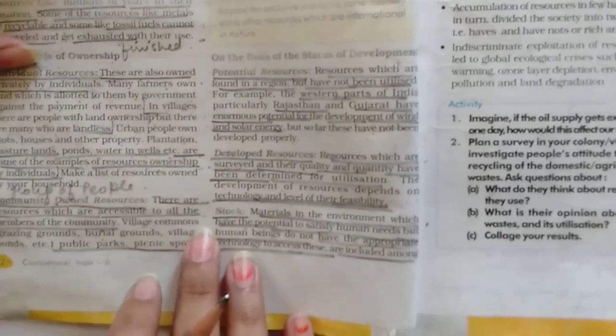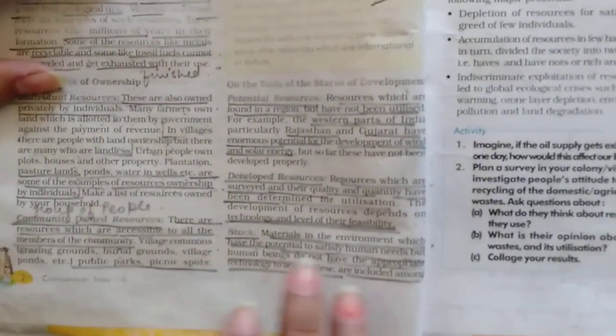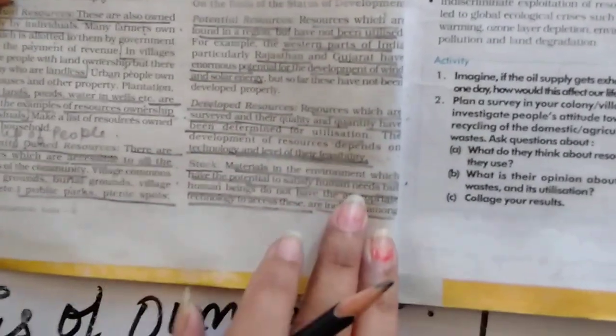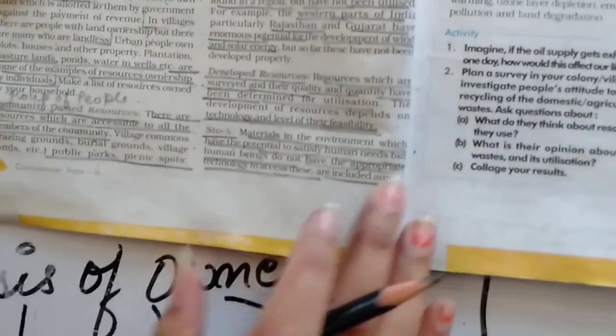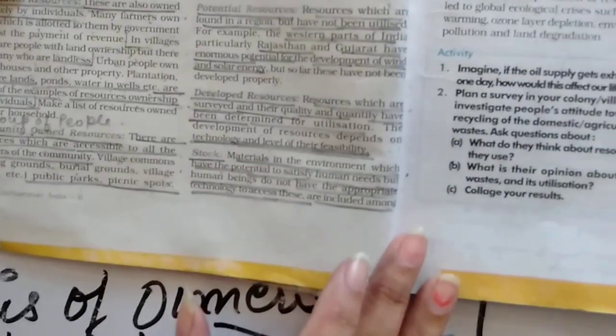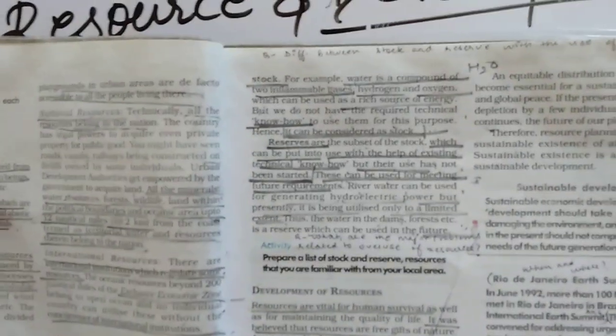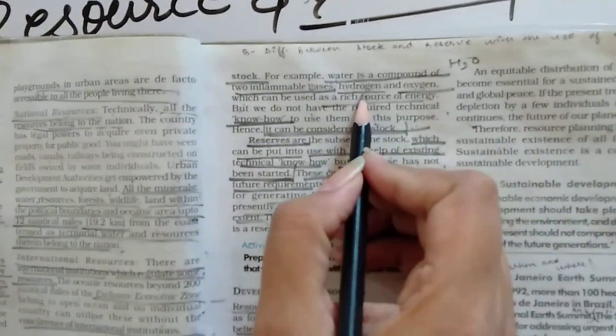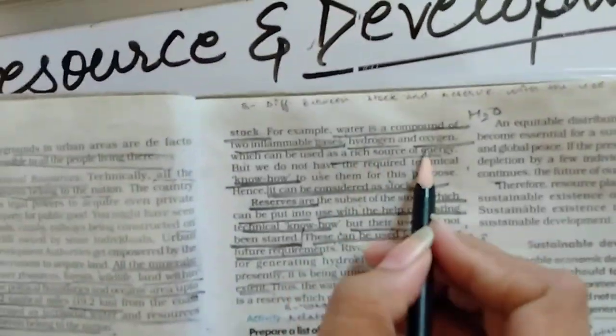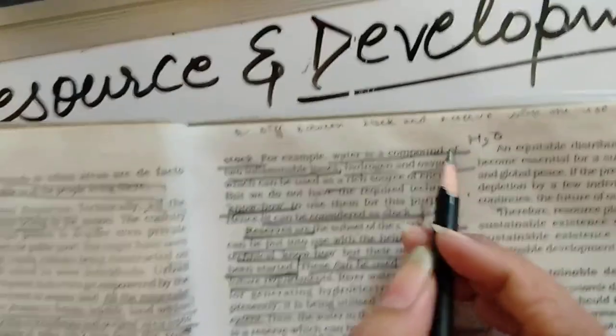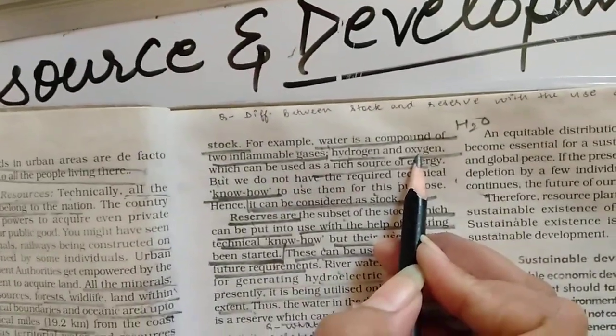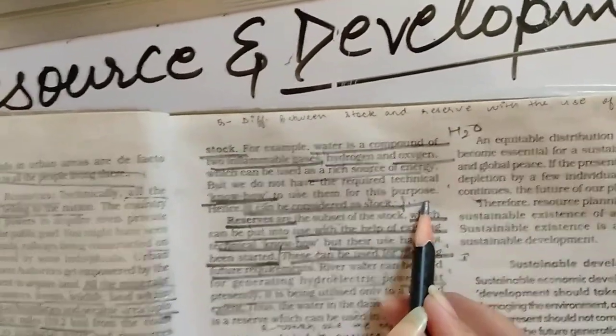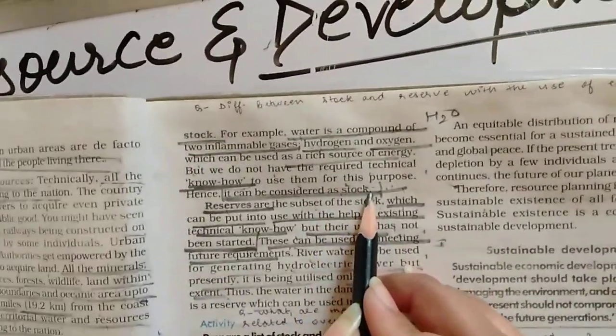Then we talk about stock. What is a stock? Materials in the environment, jinn ka paas human needs ko satisfy karne ka potential hai, but humare paas itni technology nahi hai ki hum usko use mein le sake. That is why it is included in stock. If I elaborate this, we know that water is formed from hydrogen and oxygen but we do not know how to use them for this purpose. That is why it is considered as stock.